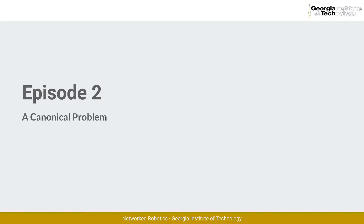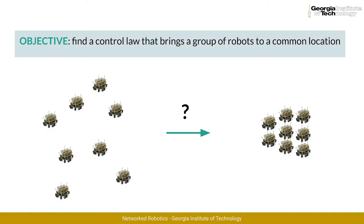The problem statement is as follows: given a set of n robots, how do we make them all meet at a common location? Today's problem is to find a control law that drives a team of robots from their initial positions to a common final location.